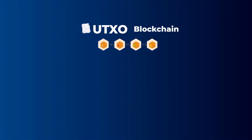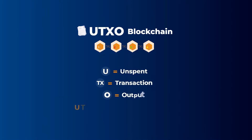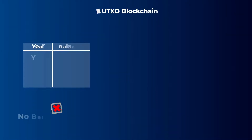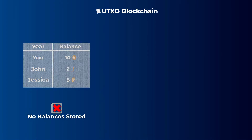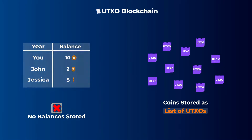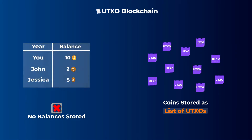Let's start with the UTXO blockchain. UTXO is an acronym for Unspent Transaction Outputs. We'll explain what that name means in a minute, but in this blockchain model there are no balances stored on the blockchain — the coins are stored as a list of unspent transaction outputs. We know that the idea of UTXO can be hard to get your head around, so let's look at an example so you can understand it.